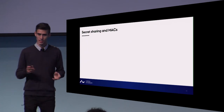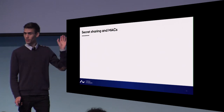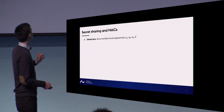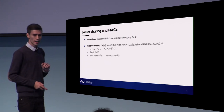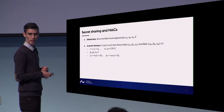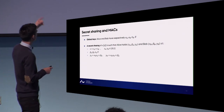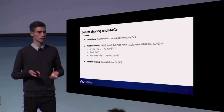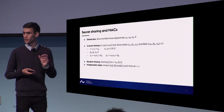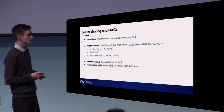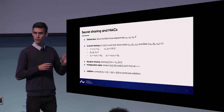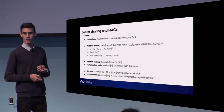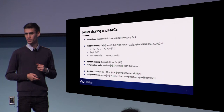A short note on secret sharing and MACs: the parties Alice and Bob each hold a global key. A secret sharing of X means X_A plus X_B forms a secret sharing of X, and the BDAS with Y's is simply a linear MAC. We have random sharings — a secret sharing of a random value — and multiplication triples: three sharings such that A·B = C. With this, parties can locally add secret shared values, and use multiplication triples via Beaver's standard trick to compute multiplications of secret sharings.